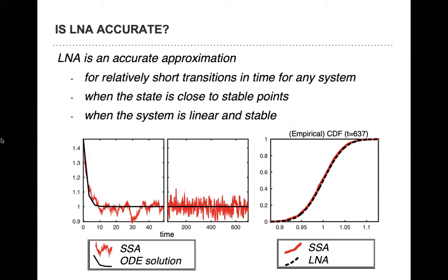LNA is accurate in specific cases: when making short time transitions, and when you have approximately linear dynamics — for example when close to a stable equilibrium point where the system remains near that state for long times. When dynamics are nearly linear, LNA approximates very well. There are theoretical reasons for this, but essentially linear dynamics is where LNA works well.